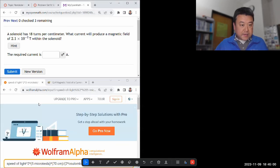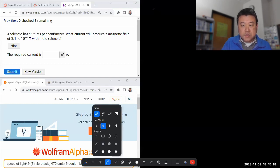So we'll do this and next question together. They both involve solenoids and I'm basically going to end up using the same formula for both of them. So the question says solenoid has 18 turns per centimeter.